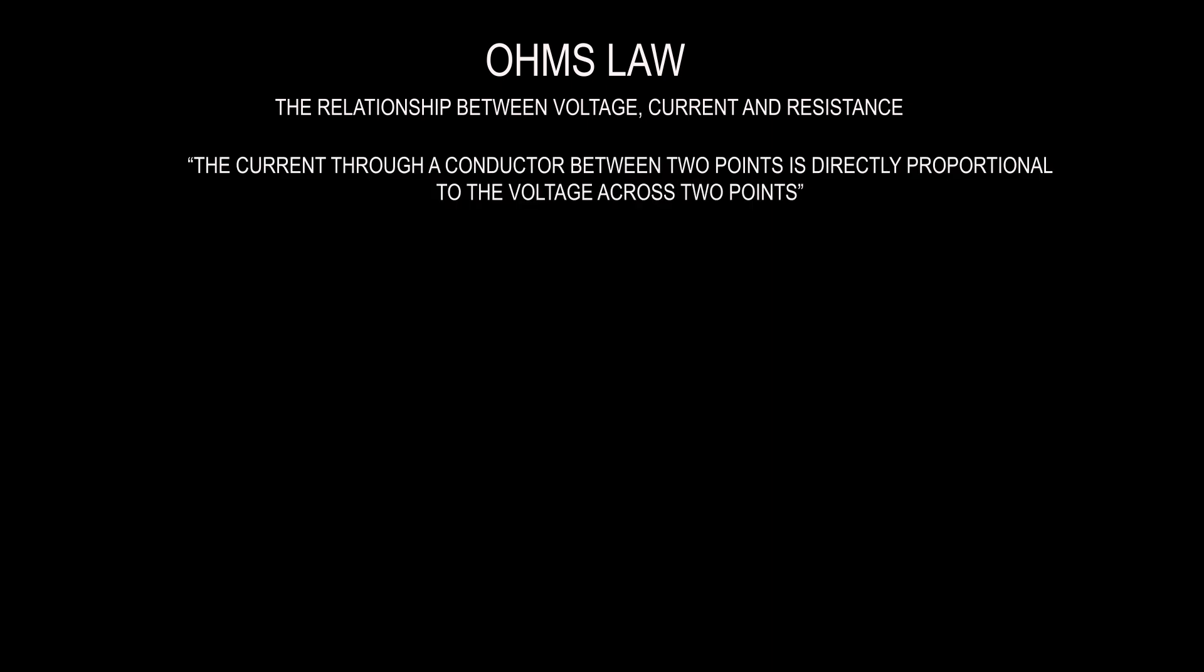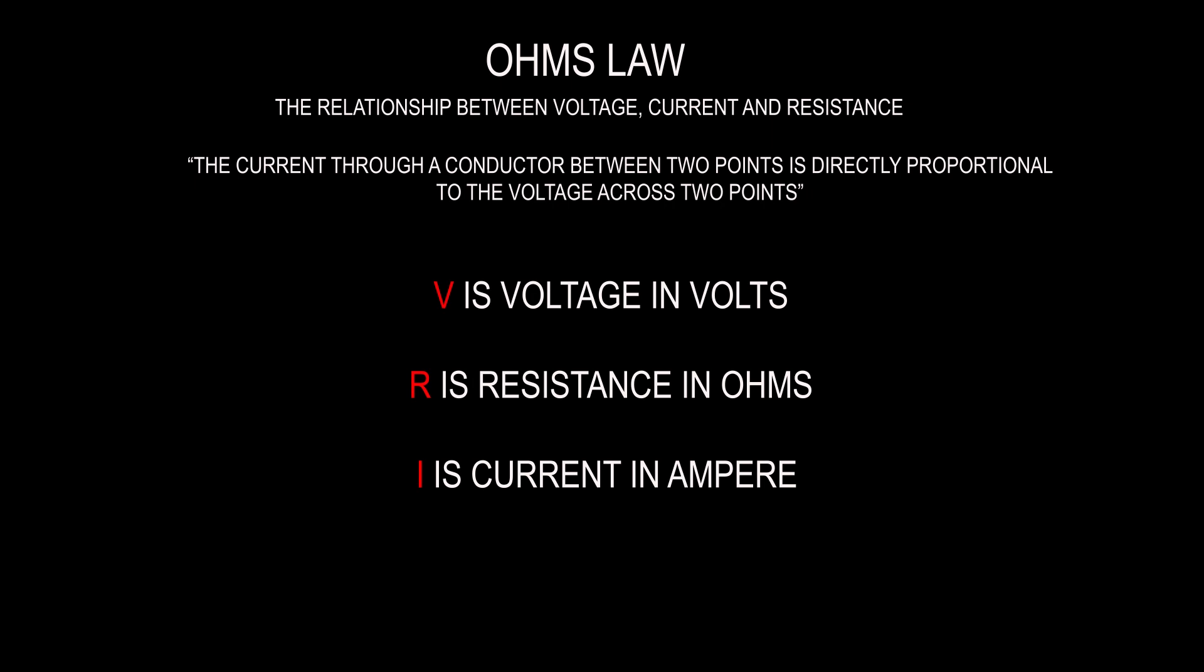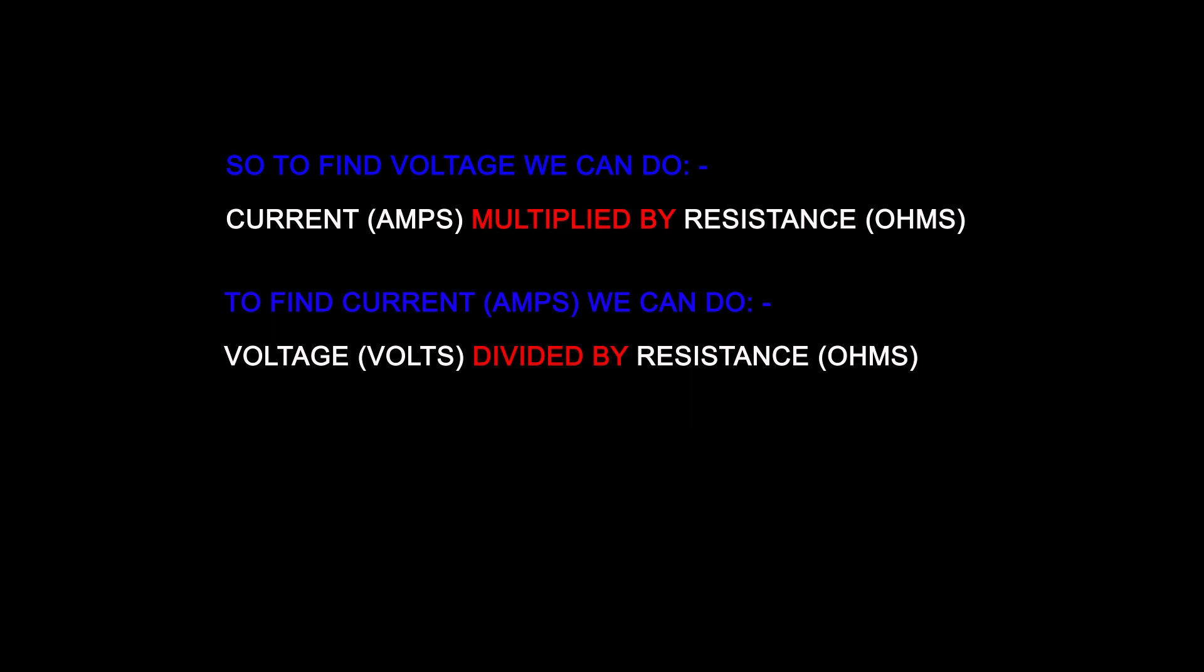This is called Ohm's law and Ohm's law is the relationship between the voltage, current and resistance. The current through a conductor between two points is directly proportional to the voltage across two points. For our calculations we treat voltage in volts which is V, resistance is in ohms which is R and current is in amperes which is I. There's a very simple calculation: V equals I times R. To work out voltage we do current in amps multiplied by resistance in ohms. To work out current we do voltage in volts divided by resistance in ohms. To find resistance we do voltage in volts divided by current in amps.